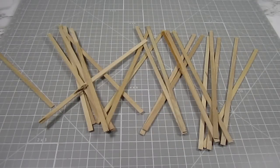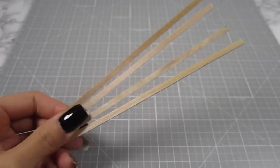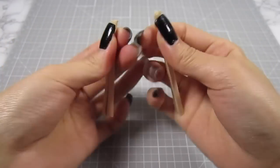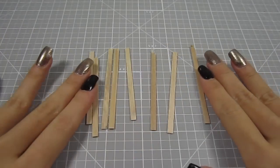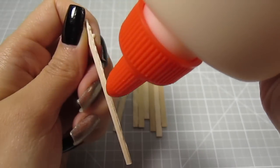The first thing we need for this project is a handful of coffee stirrers. Grab 4 of them and split them in half. We're going to glue these 8 pieces together to create the top of the table. I'm just using some wood glue for this.